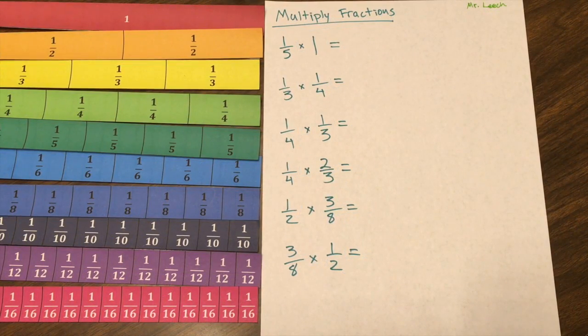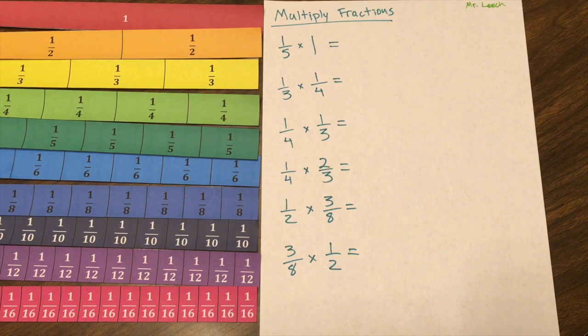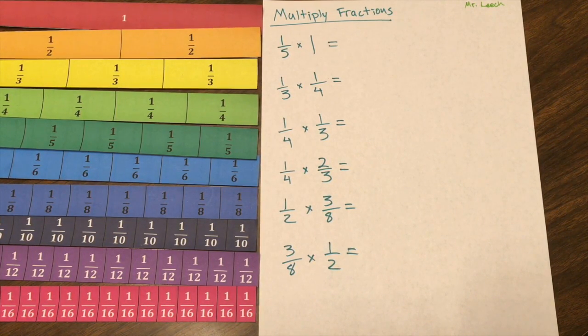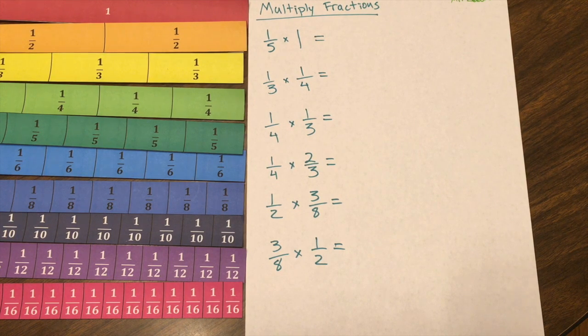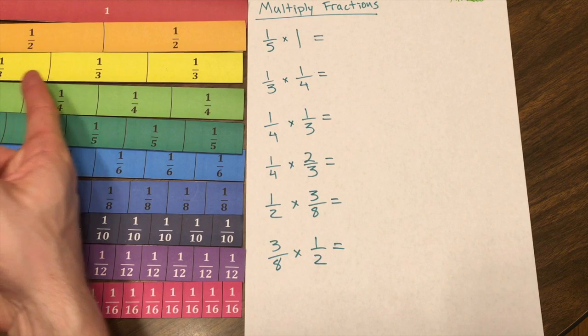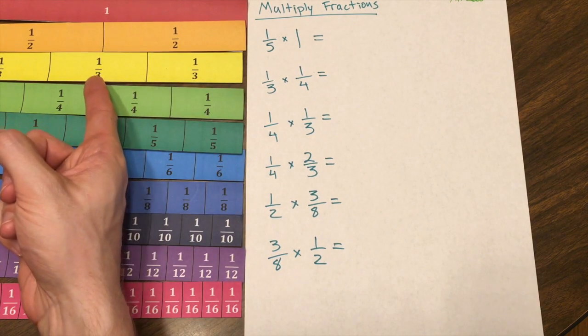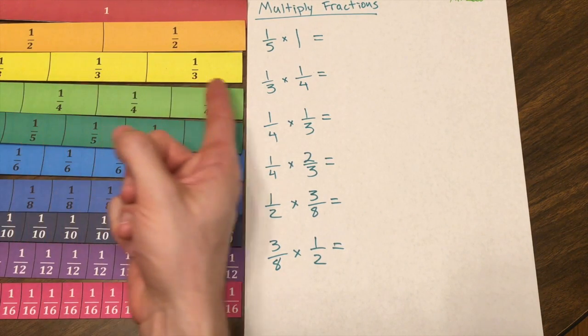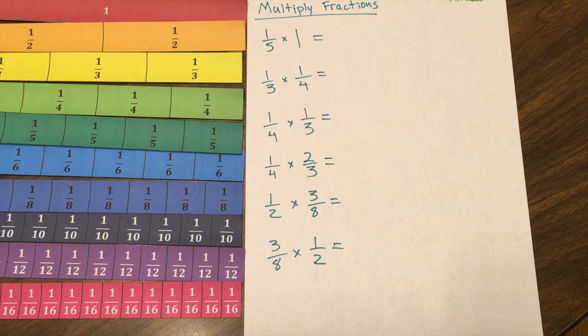I made these fraction strips in Word, print them, and cut them out using a rotary cutter. Every one of these strips adds up to be one whole. So, notice in this strip of one-third, I have one-third, another third, and a third-third to make a total of three-thirds, or one whole.